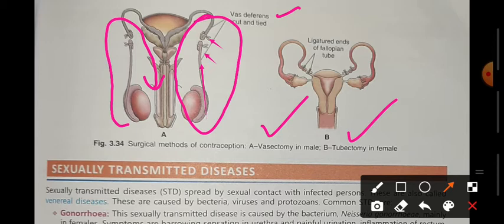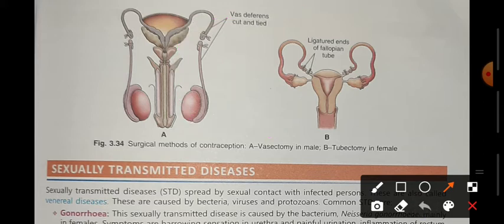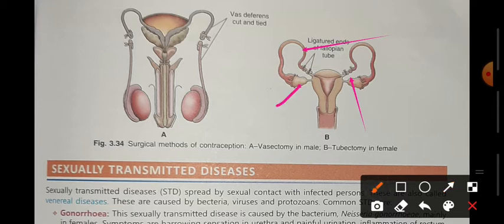For females, the procedure is called tubectomy. The fallopian tube is cut and tied up. The ovum will still be released, but it will not be able to travel to the uterus. In the female body, there will still be cyclic changes as before, but there will be no other drastic changes.